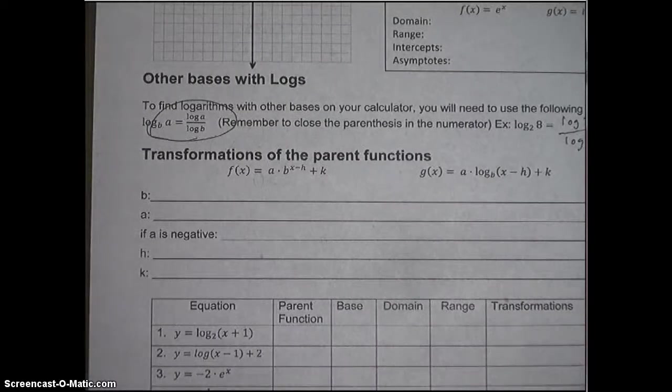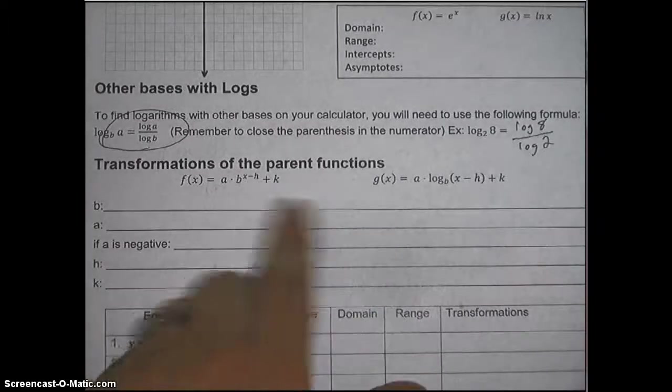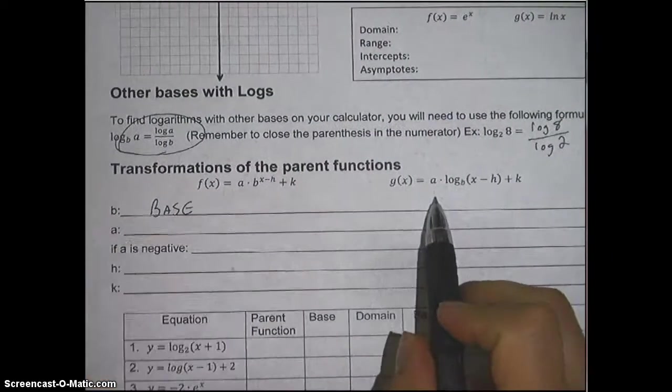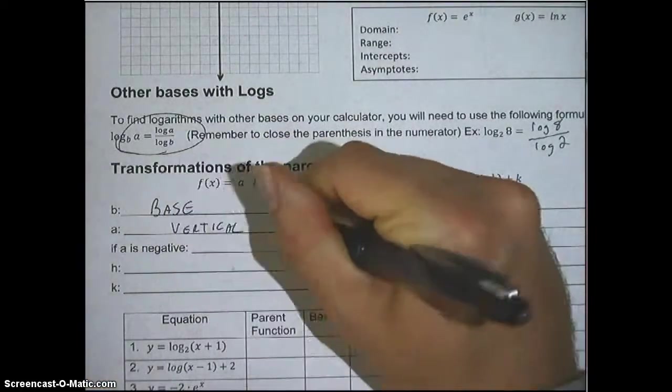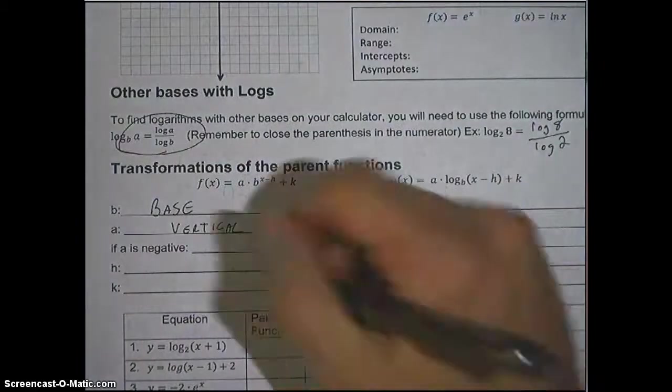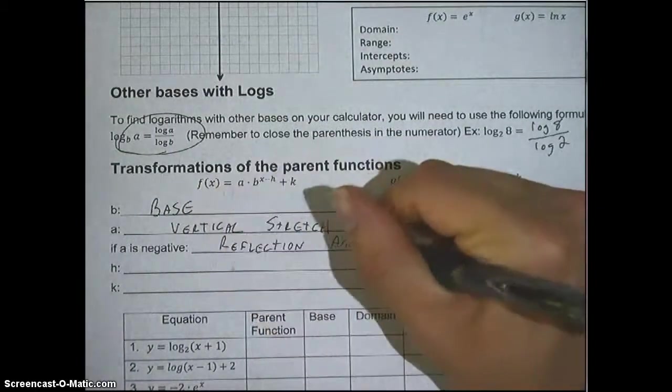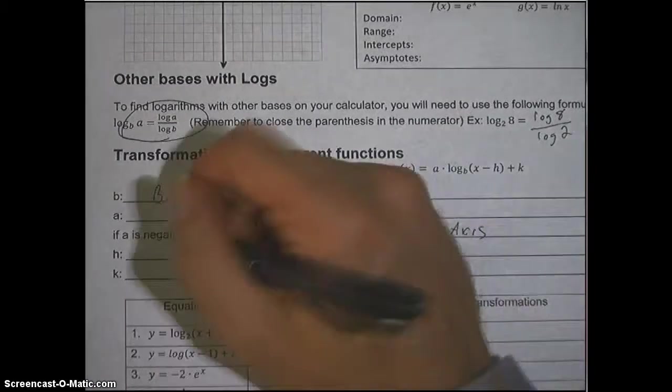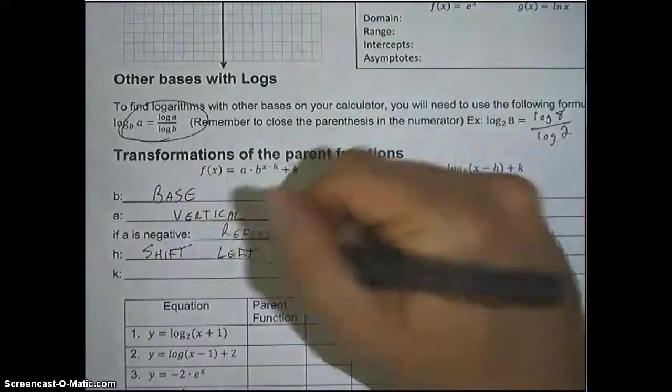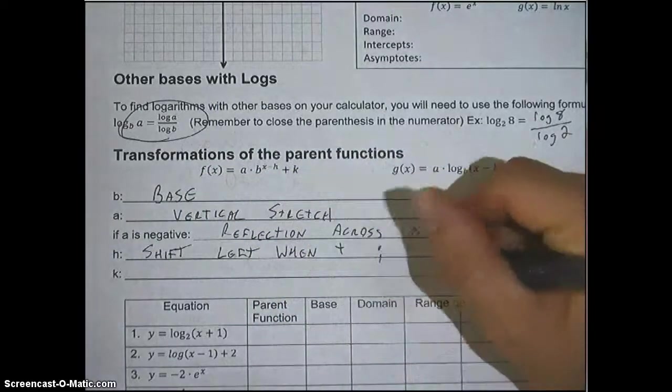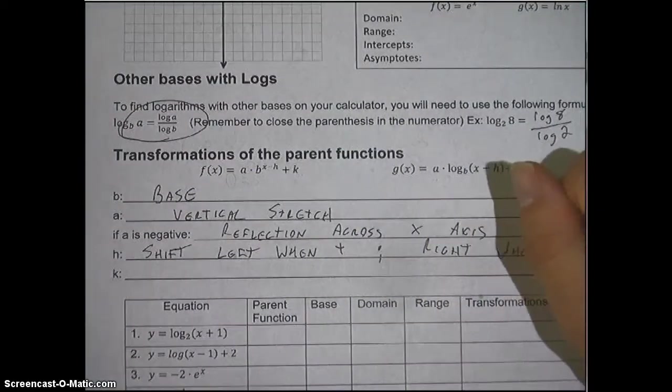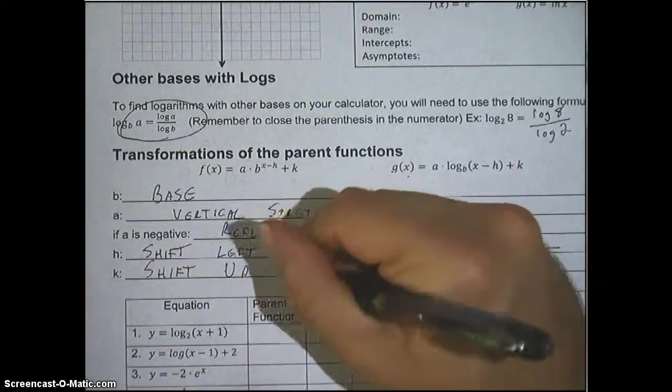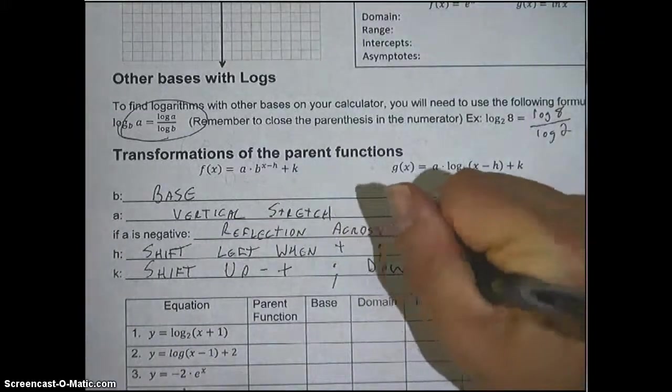Alright, quickly now. If you're talking about the two parent functions here, let's talk about what each of these things do. That b in both those equations, that's your base. The a, changing that a, is going to give you a vertical stretch. And if that a is negative, that's going to cause a reflection across the x-axis. The h is going to shift the graph left if it's positive and right if it's negative. And the k is going to shift it up and down. It's going to shift it up when it's positive and down when it's negative. So let's look at a couple of these.